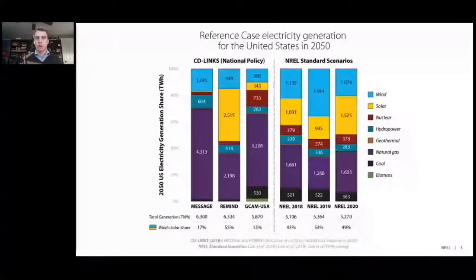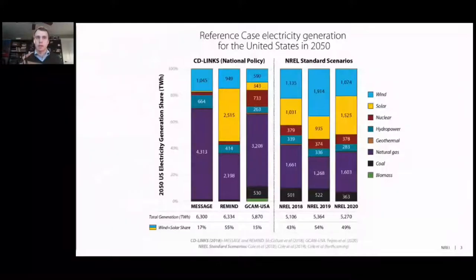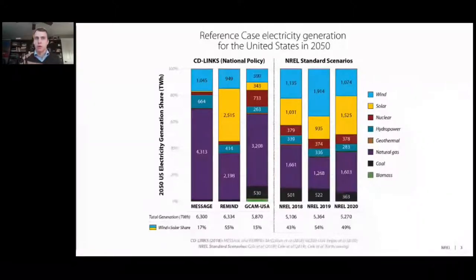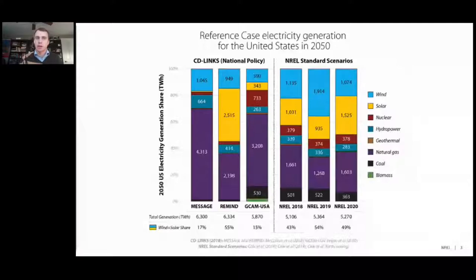Models like MESSAG and REMIND are executed as global models with a single region for the US, whereas GCAM USA is a special version of GCAM with state-level resolution. The NREL model has 134 regions for the US and is focused primarily on the electric sector, while the three IAMs have multi-sector considerations for energy, agriculture, land use, and water. Each scenario has a unique insight into the power sector evolution, but no scenario is correct given the amount of uncertainty over the next 30 years to 2050.